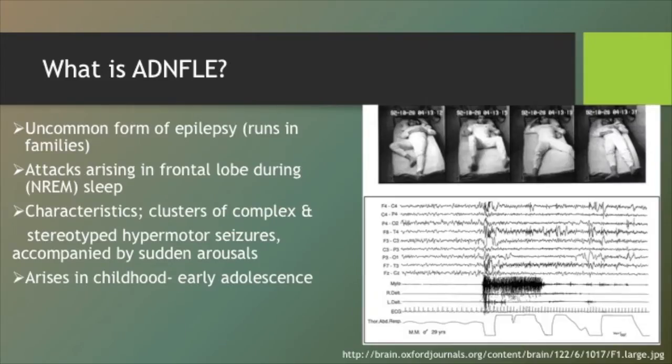Autosomal dominant nocturnal frontal lobe epilepsy is a partial epilepsy arising in childhood or early adolescence. Attacks arise in the frontal lobe, usually during the second stage of sleep, and are characterized by clusters of complex and stereotyped hyperkinetic seizures accompanied by sudden arousals. ADNFLE is a rare familial seizure disorder.